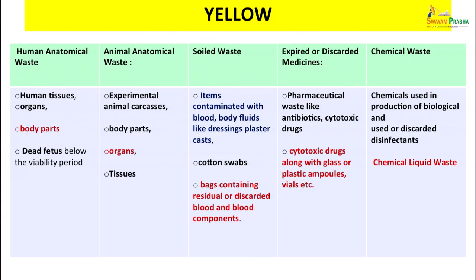The yellow bag can contain: human anatomical waste such as tissues, organs, body parts, dead fetus; animal anatomical waste including carcasses, body parts, organs and tissues; soiled waste — items contaminated with blood or body fluids, dressings, plaster casts, swabs, bags containing blood and components; expired or discarded medicines including antibiotics; cytotoxic drugs with glass ampules; chemical waste used in production of biologicals; used or discarded disinfectants; and chemical liquid waste.